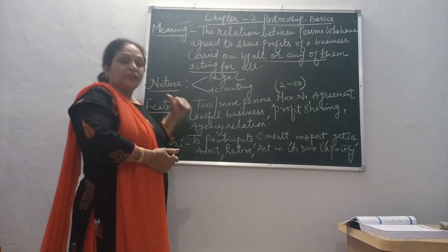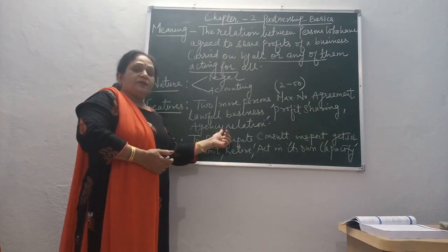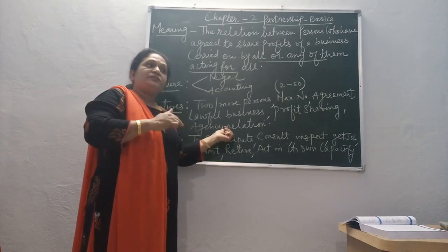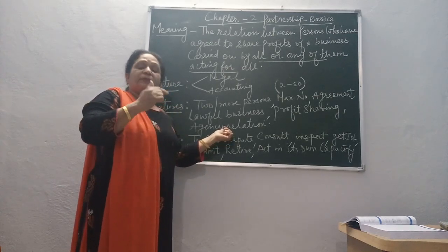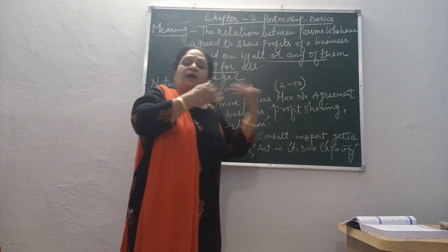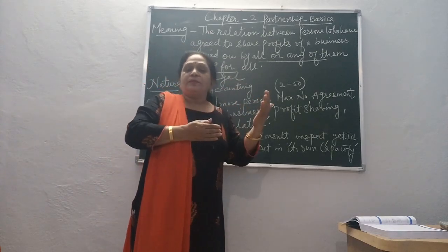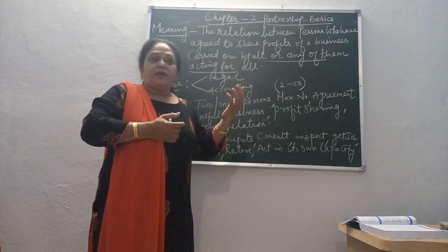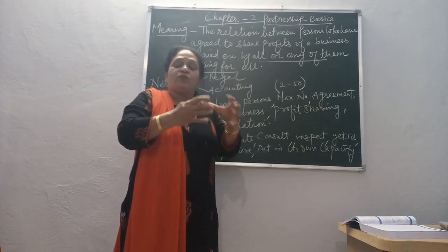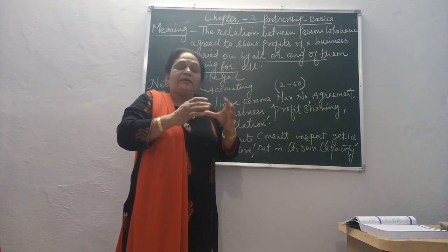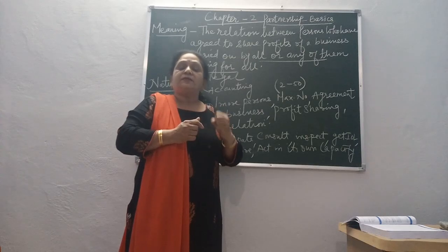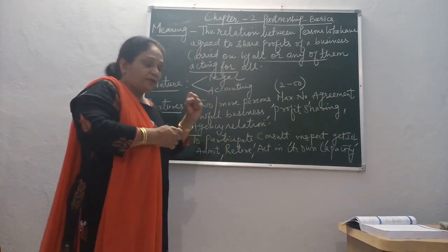Agency relationship means every partner is an agent as well as the principal. When he acts on behalf of the firm, he acts as an agent. And when he works by consultation with all the partners, he behaves like a principal — as the main decision maker.